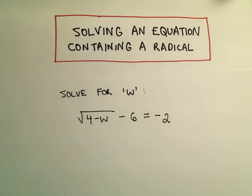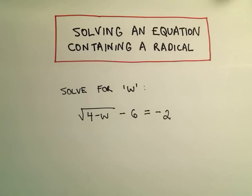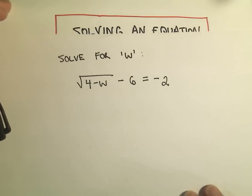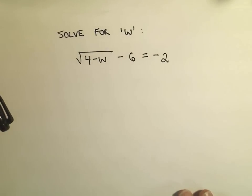Alright, in this video I just want to do another problem where we're going to solve an equation containing a radical. So here we have the problem square root of 4 minus w minus 6 equals negative 2.